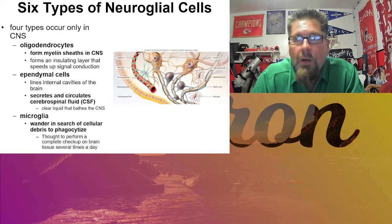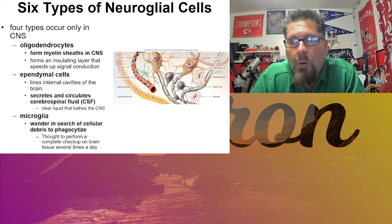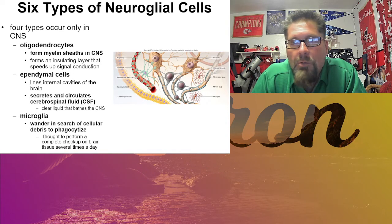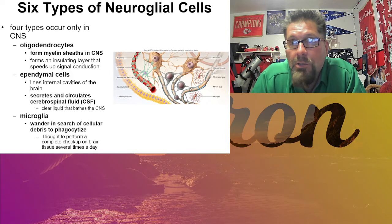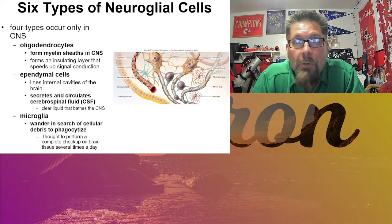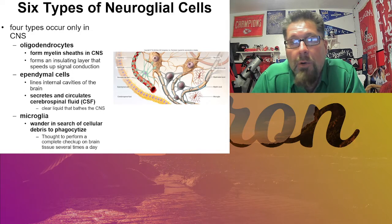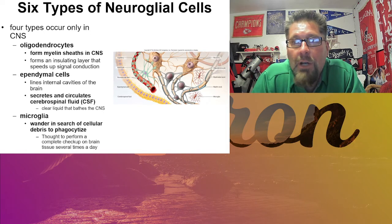If you look to the far left of the diagram, there's a long row going from top to bottom of yellow, cuboidal-type cells — those are ependymal cells. They line the internal cavities of the brain. We're talking CNS here, so the brain. You can't have ependymal cells in the PNS because there's no brain there. A different type of cell does the myelin sheaths in the PNS.